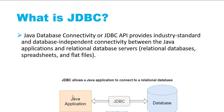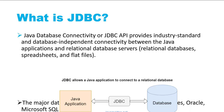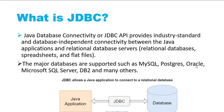Here you can see a diagram: it's a Java application and a database, and we use the JDBC API to connect the Java application to the relational database. Major databases are supported, such as MySQL, Postgres, Oracle, Microsoft SQL Server, DB2, and many others. In further lessons I will demonstrate how to use the JDBC API to connect a Java application with a MySQL database.